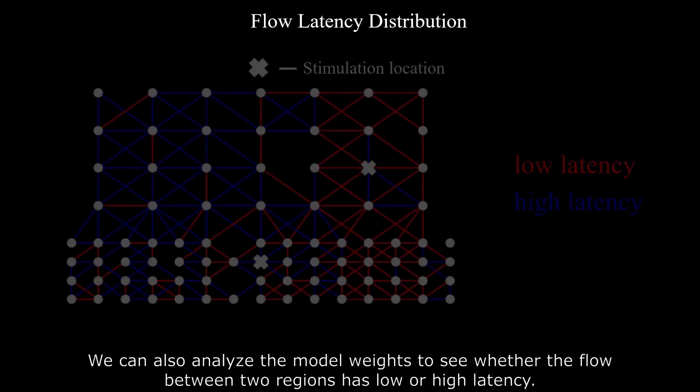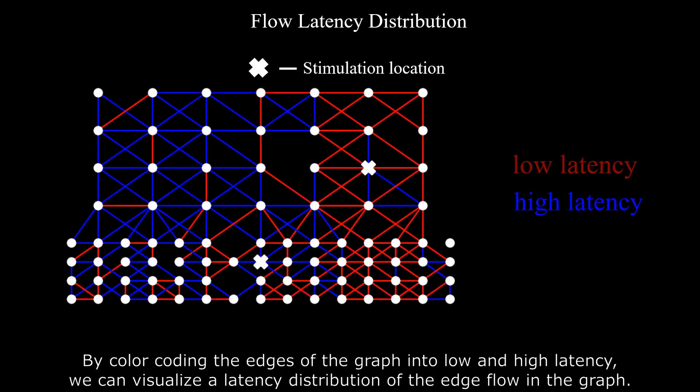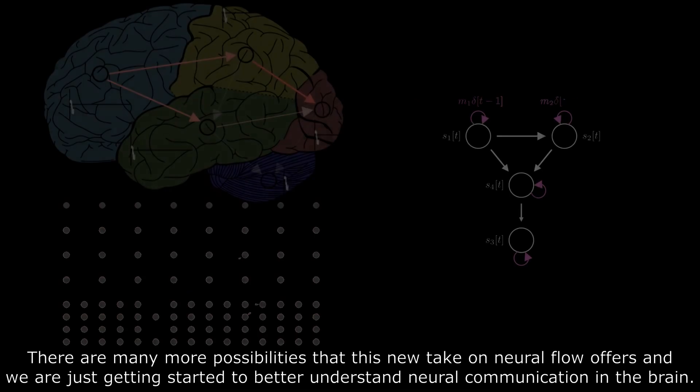We can also analyze the model weights to see whether the flow between two regions has low or high latency. By color coding the edges of the graph into low and high latency, we can visualize the latency distribution of the edge flow in the graph.